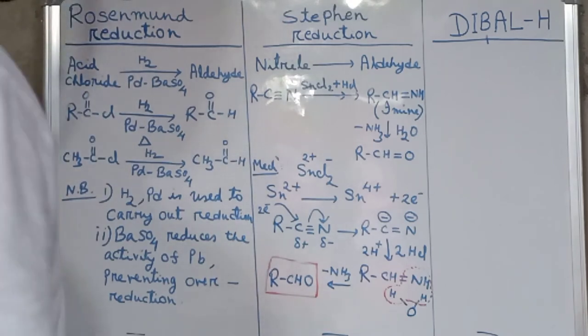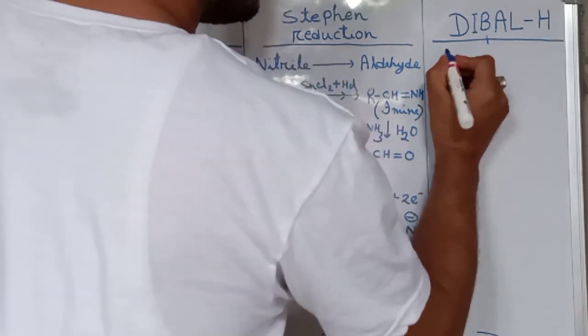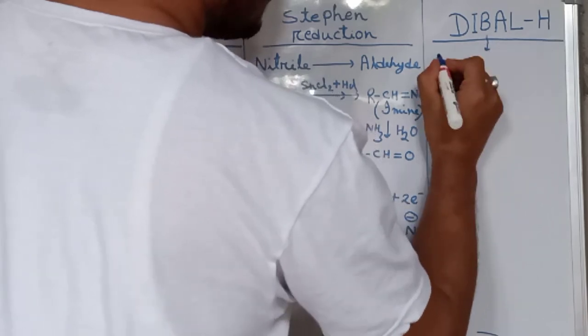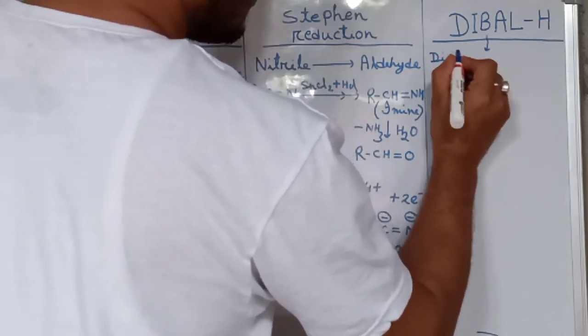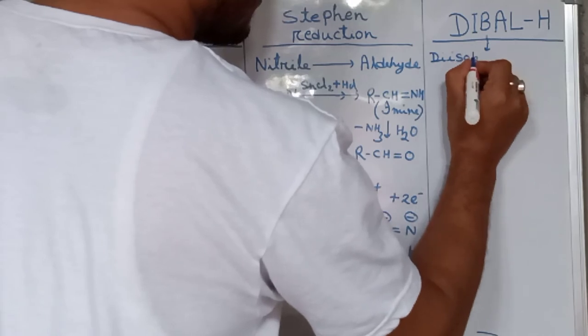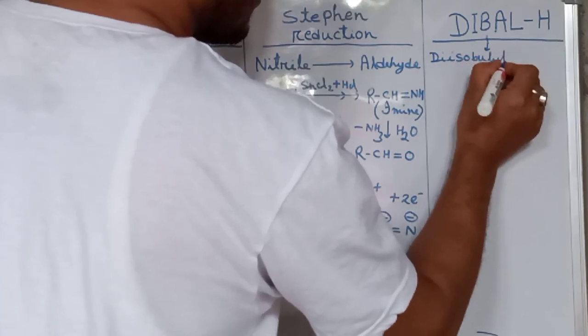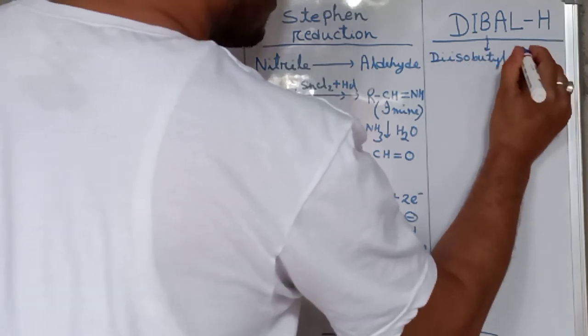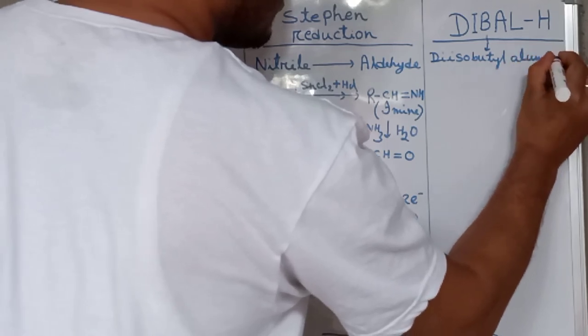It is a very important reducing agent. DIBAL-H, its full name is diisobutyl aluminum hydride.